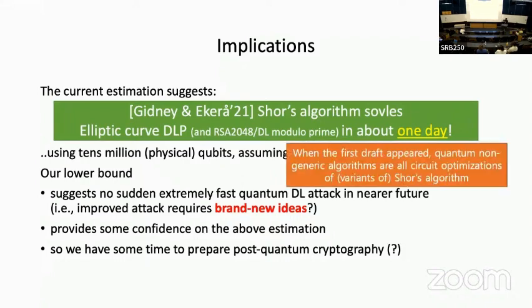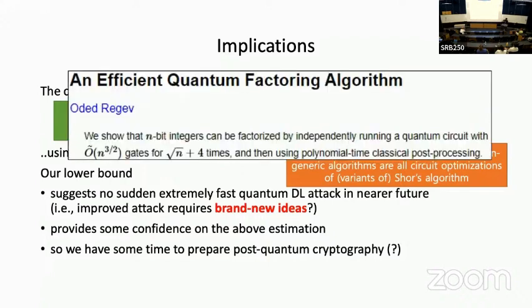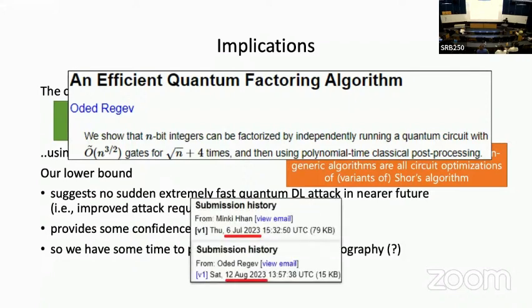These implications were what I wrote when I uploaded the paper. But the problem is that an efficient quantum factoring algorithm improved upon Shor's algorithm appeared — and I said Shor's algorithm is optimal. It was just one month later than my paper, so I needed to revise it. I changed a lot of parts of the paper because of this.